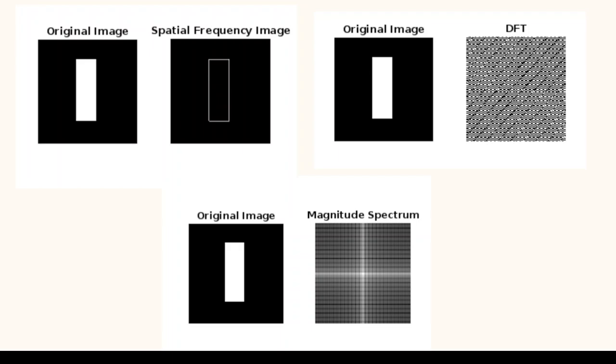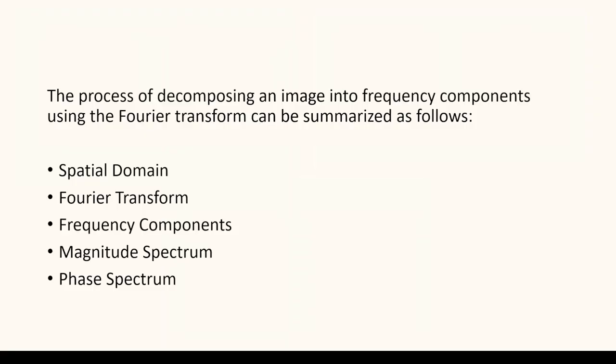The process of decomposing an image into frequency components using Fourier transform can be analyzed by understanding the following components: the image in spatial domain, the image after applying Fourier transform, the frequency component, the magnitude spectrum, and the phase spectrum. Now let us understand the image in each of these steps.